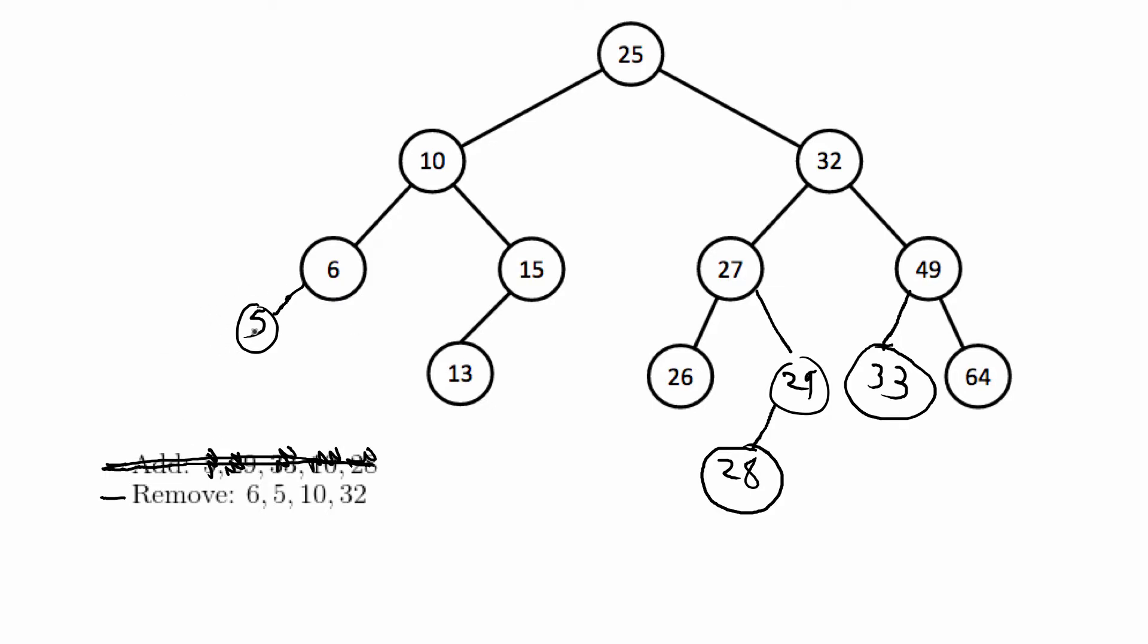You can remove just one leaf that has no children and all you have to do is remove that node so that's one case. The second case is when you're removing a node that has one child.